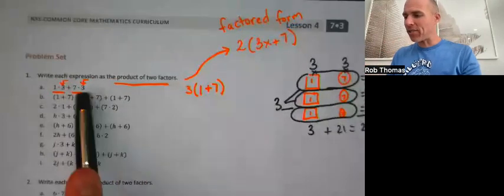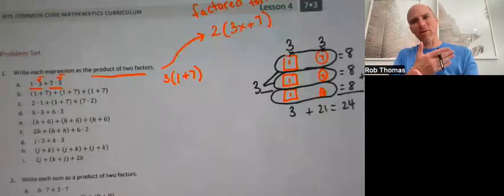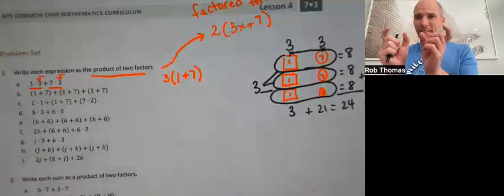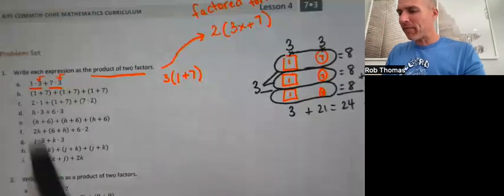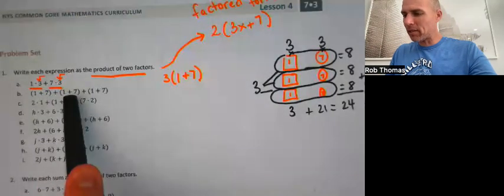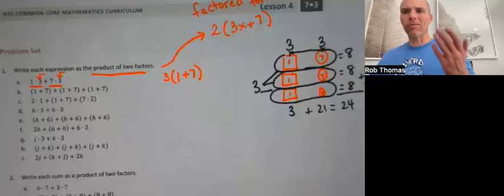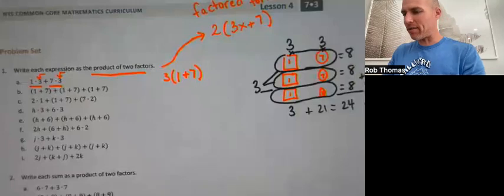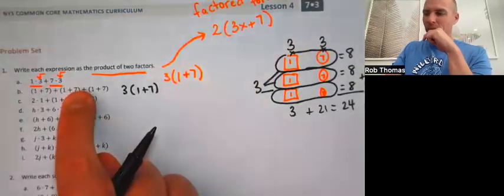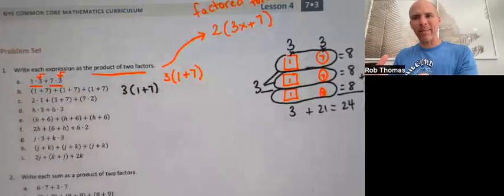So that was factoring — we factored out the three. The other skill we need is grouping. It's sort of like the opposite: combining like terms, but you can do it with things in parentheses, not just terms by themselves. Each thing in the parentheses here is identical — you've got one plus seven three times. So in total you have three (one plus sevens), and we can write it as 3 times (1 plus 7).